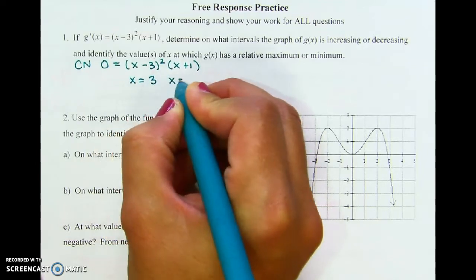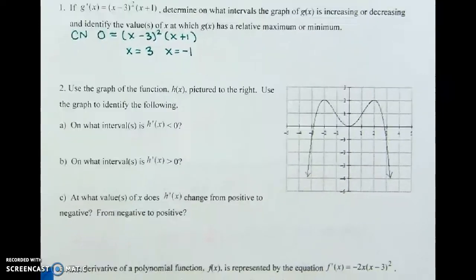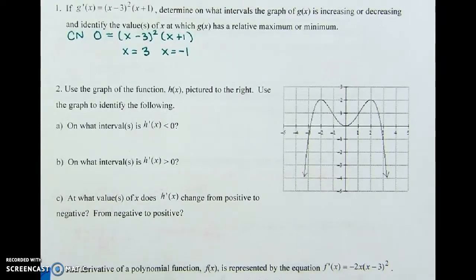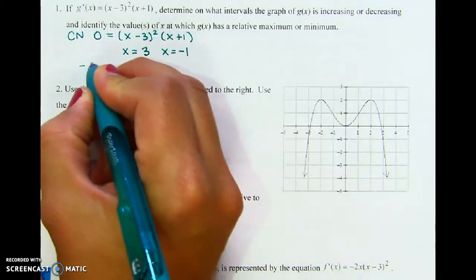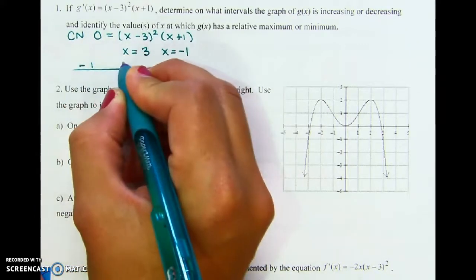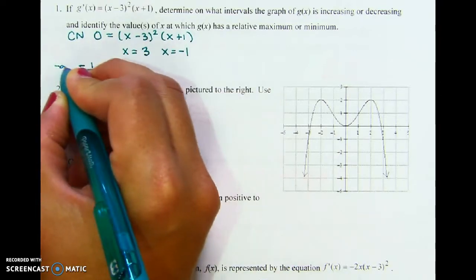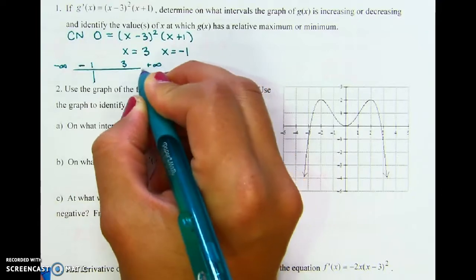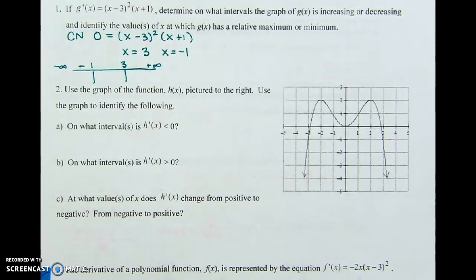We're going to make a sign chart. I'll put negative one first because negative one is less than three, and we're going from negative infinity to positive infinity. Calculus on a Monday morning — here we go!